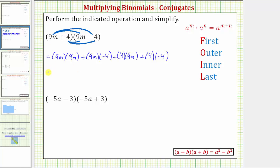Now let's find each product. 9m times 9m is 81m squared, and we have plus 9m times negative 4, that'd be plus negative 36m, or just minus 36m. And we have plus 9 times 4m, that's plus 36m. And finally we have plus 4 times negative 4, that'd be plus negative 16, or just minus 16.